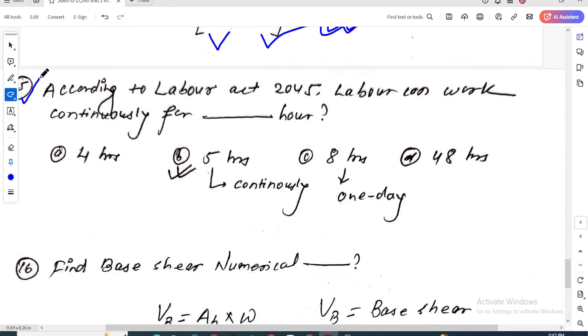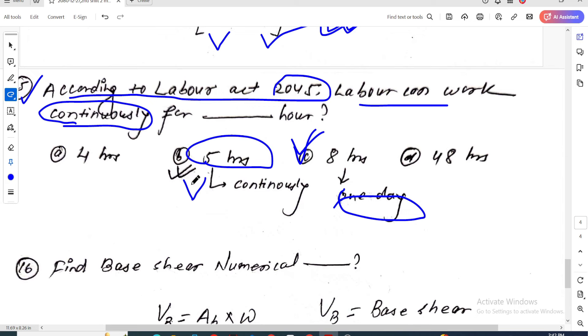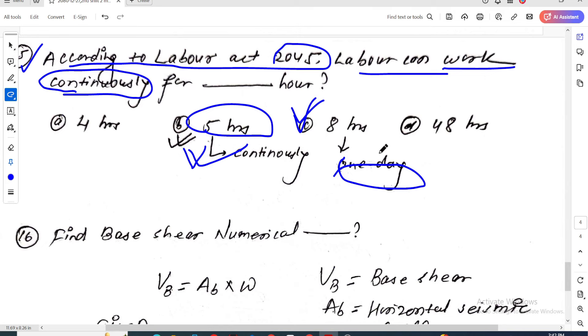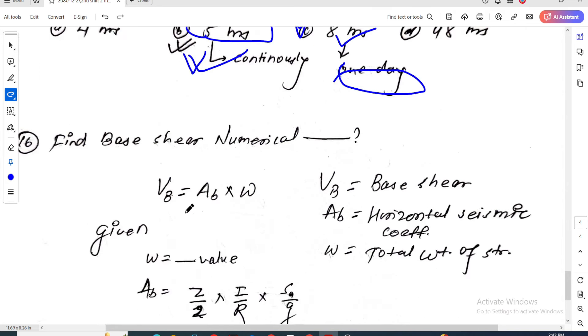Question fifteen regarding Labor Act 2045: How long can a laborer work continuously? The answer is 5 hours. Don't confuse this with the 8-hour total workday limit. Continuously means 5 hours, but the total day is 8 hours.